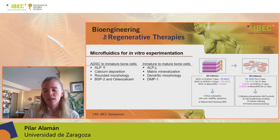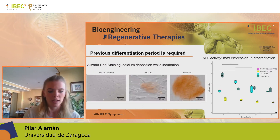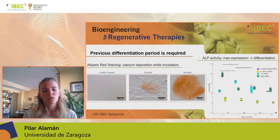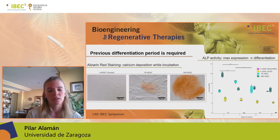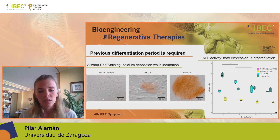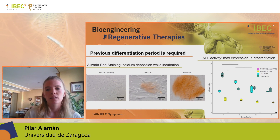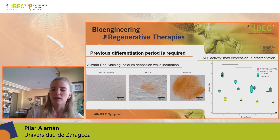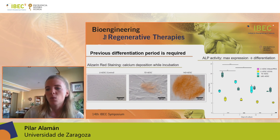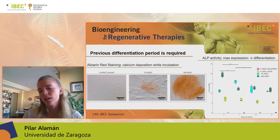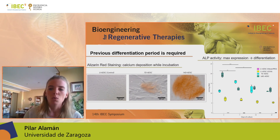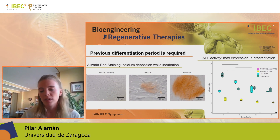I want to briefly comment on some results. The first conclusion was that a previous differentiation time of the cells was required to obtain a fully differentiated model. We assayed four different lines: first, we used stem cells with expansion medium as a control, and then we assayed the other three lines with osteogenic culture medium — once with undifferentiated cells in osteogenic medium inside the devices, and then with previously differentiated cells.